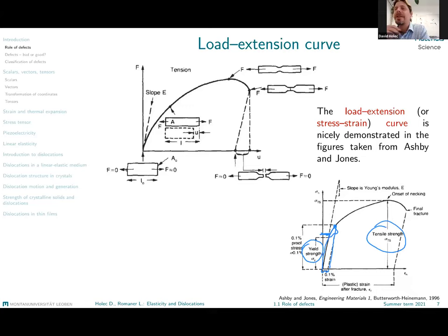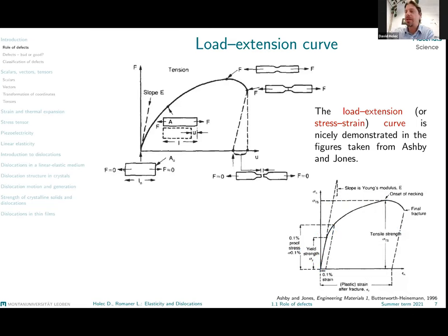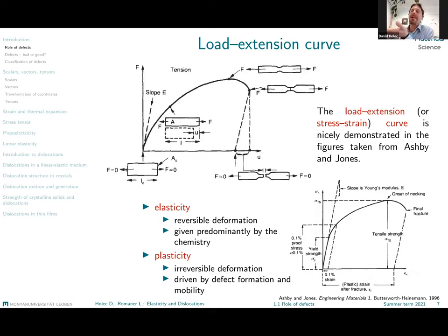Tensile strength is another important term from mechanical properties: it is the maximum force or stress a material can bear before breaking. To summarize: elasticity describes reversible deformation — not necessarily a linear relationship between stress and strain — whereas plasticity describes irreversible, permanent deformation which remains even after relieving the force.